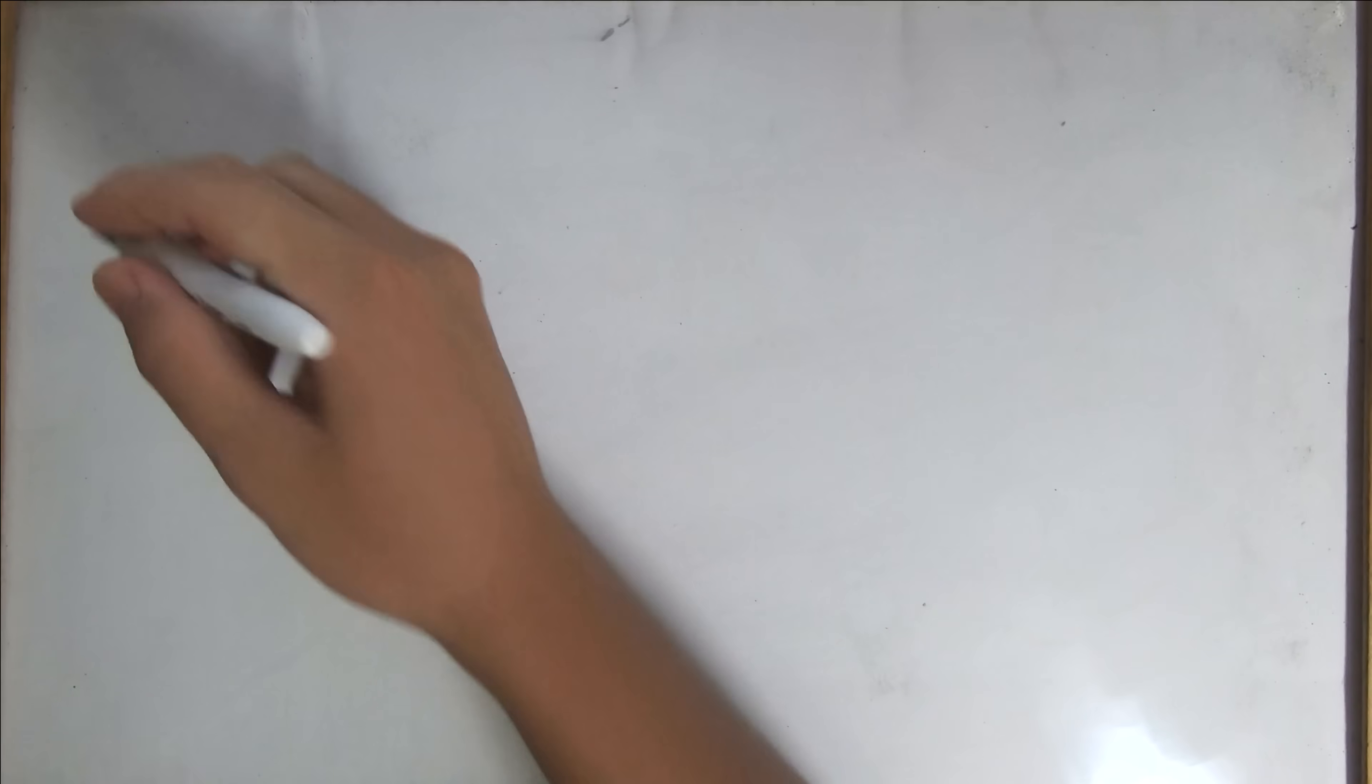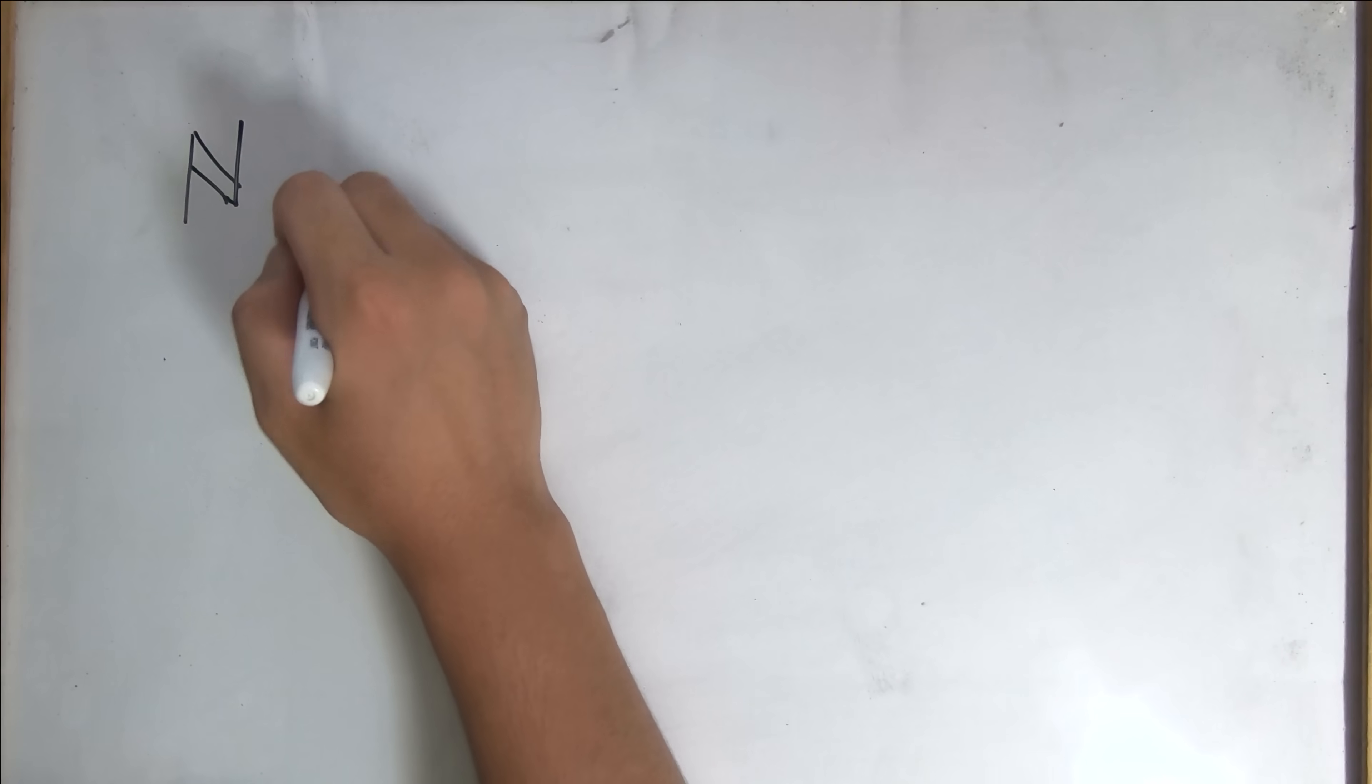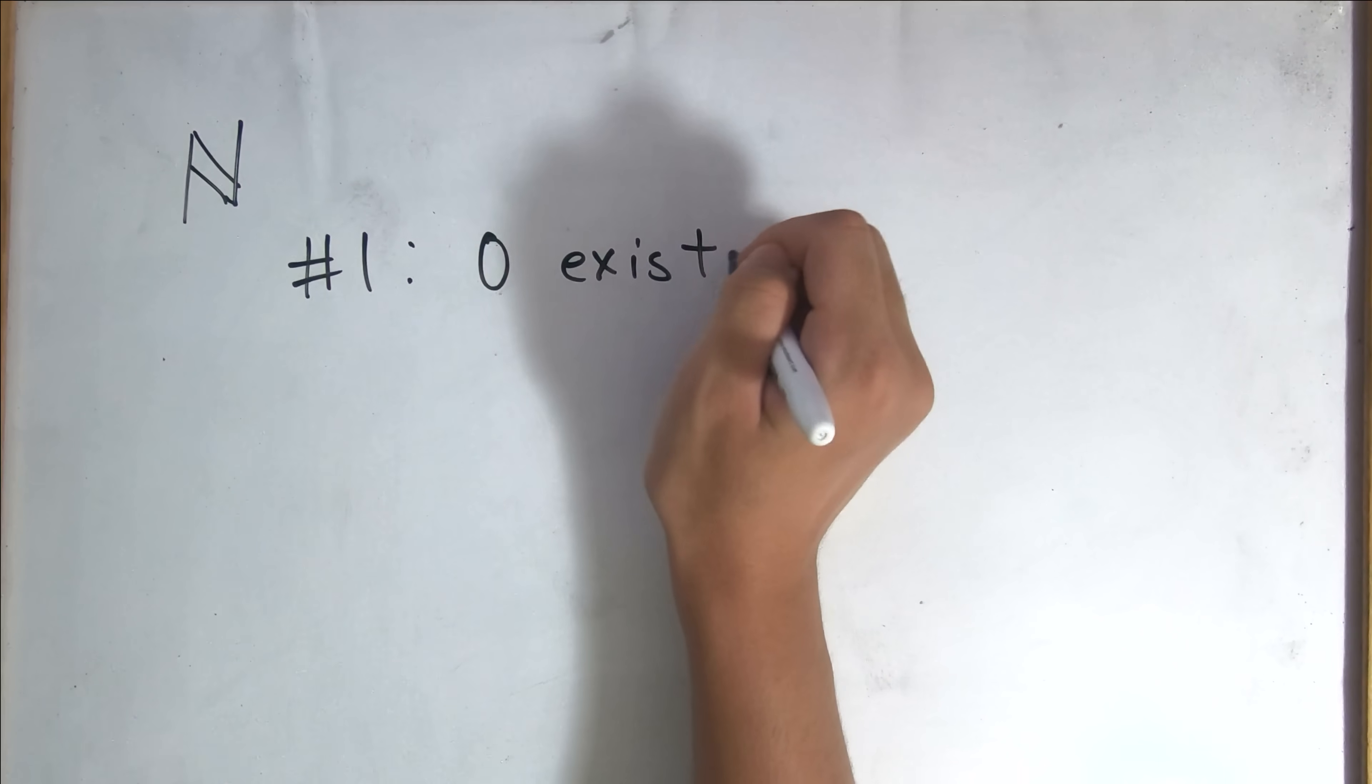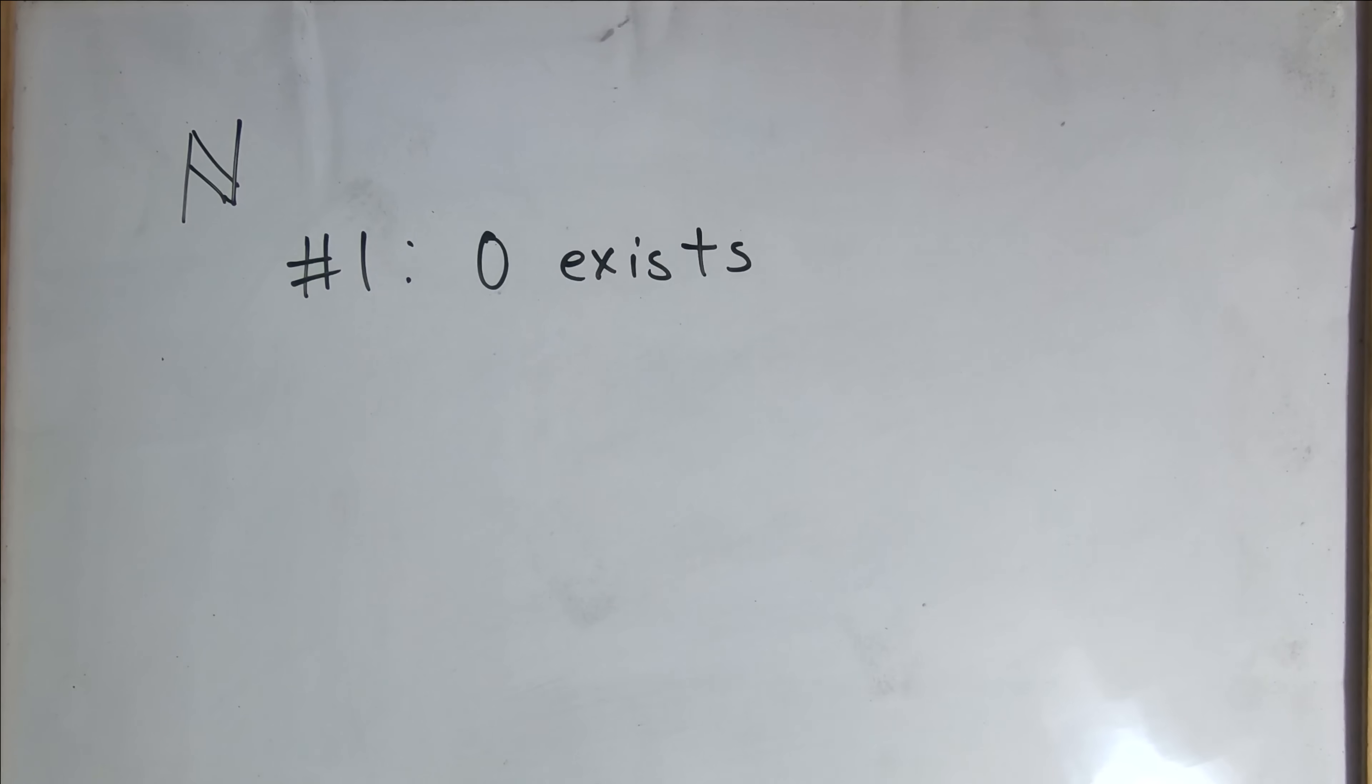Moving on, we need to define natural numbers. Number 1. Zero exists. So we first start by stating that zero exists in this set of natural numbers. Now it is often debatable whether zero is a natural number or not, but for the sake of our purposes, we will say that zero is in this set of natural numbers.